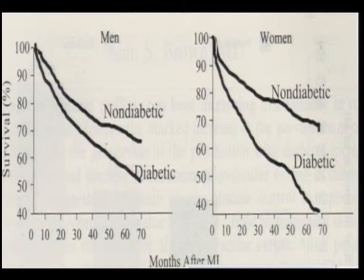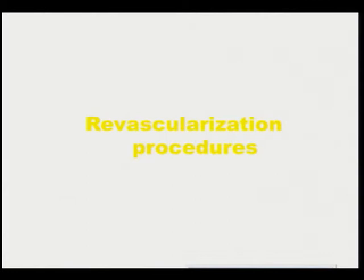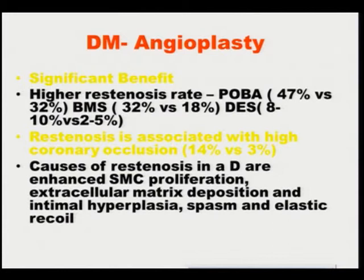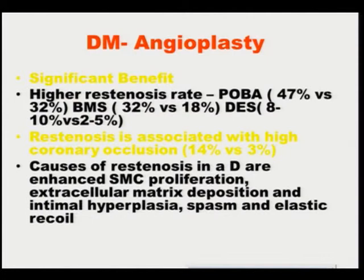When diabetics are followed up following an acute myocardial infarction, they have a bad prognosis compared to non-diabetics, both in males and females, but more so in females. When you look at revascularization procedures, angioplasty is definitely beneficial in a diabetic, but they have a higher restenosis rate — almost twice that of a non-diabetic. Restenosis in a diabetic is more often associated with coronary artery occlusion compared with a non-diabetic, and there are multiple reasons for the development of restenosis in a diabetic patient.